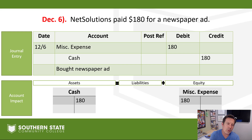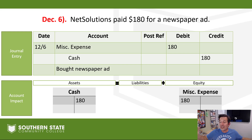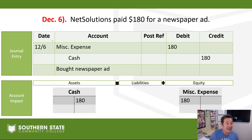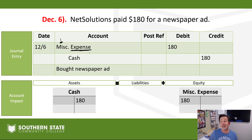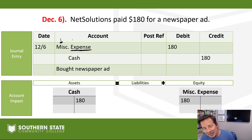You might ask why we don't call it 'advertising expense' instead of miscellaneous. We could totally do that — in fact, that's probably how it would work in real life. The key is that we're calling it an expense, which tells us what kind of account it is. The first part — miscellaneous, utilities, wages, advertising — is just descriptive. The word 'expense' tells us where that account lives: on the income statement.